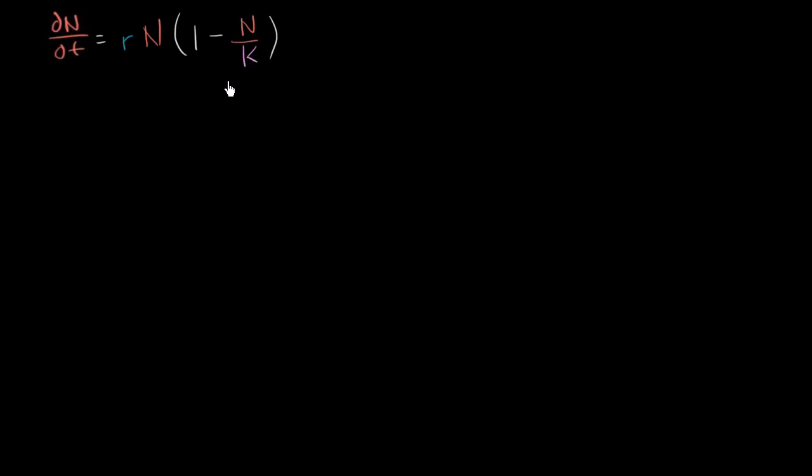We saw that if we wanted to solve this, and we didn't want one of the constant solutions of n of t equals 0 or n of t equals k, which we did in the last few videos, we got the solution that n of t is equal to our initial n, n naught, times our maximum population, all of that over our initial population plus the difference between our maximum population and the initial population.